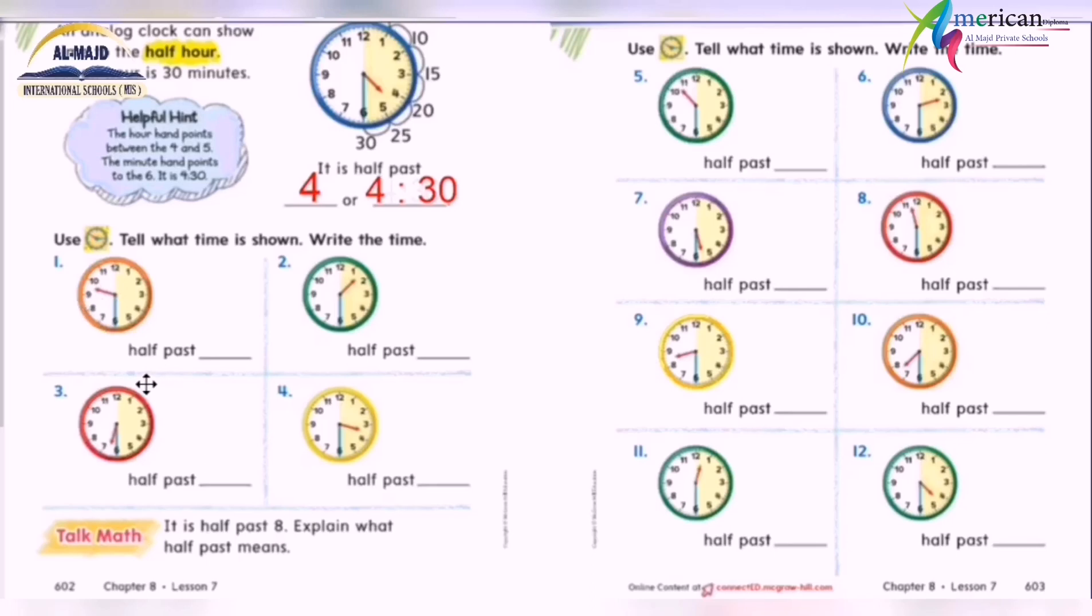So it's half past nine. Here the hour hand is on one, the minute hand on six, so it's half past one. Here the hour hand is on six, the minute hand on six, so it's half past six. Here the hour hand is on three, the minute hand on six, so it's half past three, and so on.